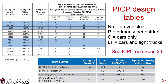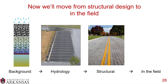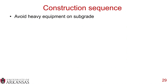The ICPI Tech Spec 24 has a lot more information on PICP design. For any type of pervious pavement, there's a certain construction sequence. First, you want to avoid heavy equipment on the subgrade — you want a nice, evenly compacted, homogeneous subgrade.